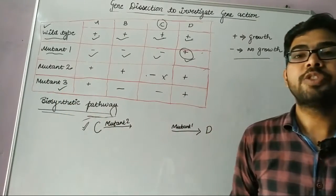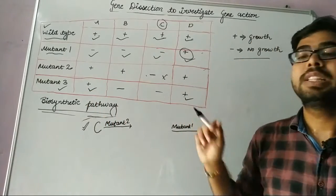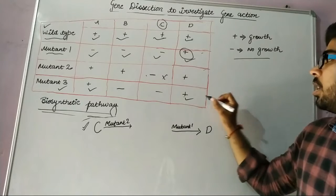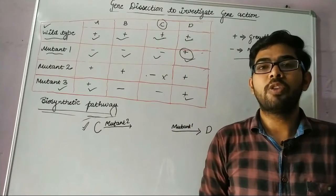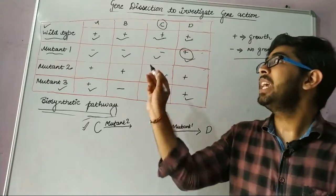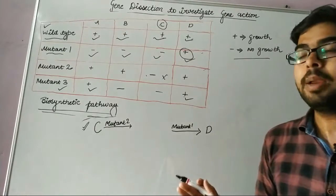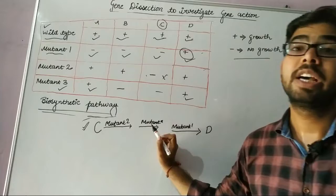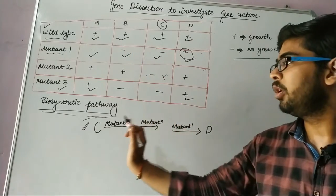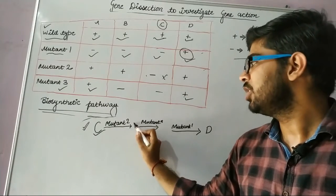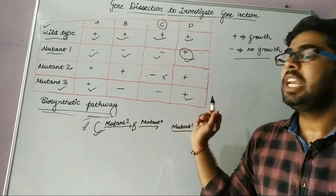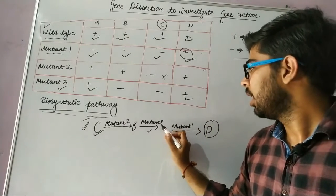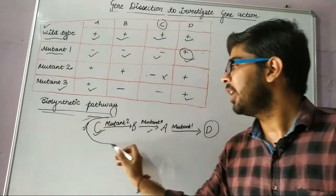In the case of mutant 3, growth is found with A and D, suggesting that A and D are found after the mutant 3 site. But with B and C there is no growth, so B and C are found before the mutant 3 point. C is already placed, so B is positioned before mutant 3. A and D are found after mutant 3; D is already placed, so A comes after mutant 3. This gives us our biochemical pathway.